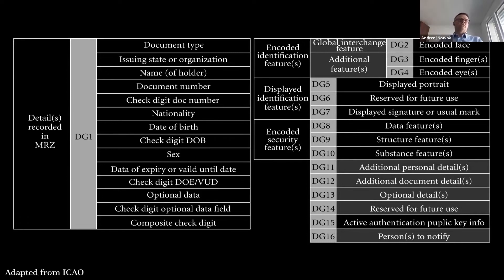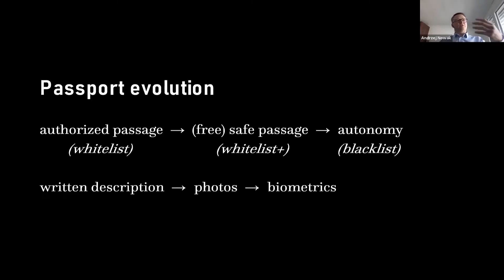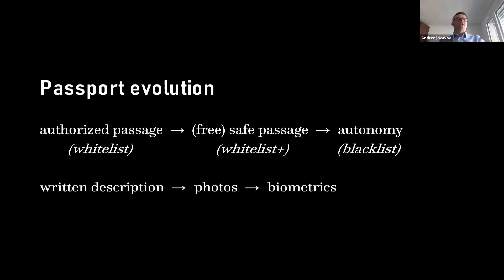In terms of passports, we've moved from authorized passage — a whitelist — to free passage — a whitelist-plus where those allowed can pass — to an autonomy model which is more like a blacklist. Today, for example, someone who ends up on a no-fly list in the US has a very difficult life because it's a big country. We've also progressed in the sensitivity of information: from written descriptions to photographs, to biometrics. Written physical descriptions were considered very degrading to individuals — so already in the 1900s we switched very quickly to photography. Even group photos were accepted in identity documents. And when we move to biometrics, the machine is reading them — it determines whether you can travel and who you actually are — which is very interesting because machines have really inserted themselves into the whole equation over time.